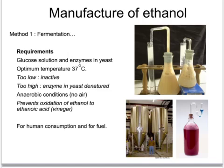To make ethanol by fermentation we need an aqueous solution of glucose, we need enzymes within yeast, we need a temperature of around about 37 degrees, anything very much lower than that the enzymes become inactive and anything very much above that the enzyme becomes denatured and stops working.